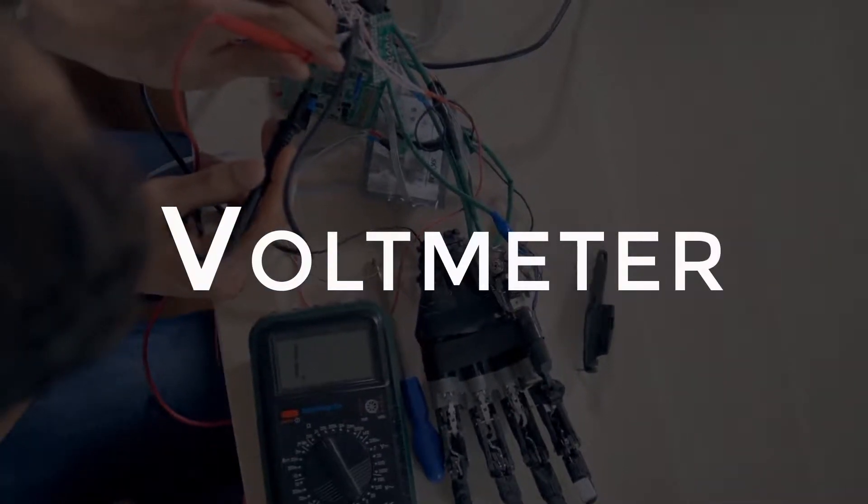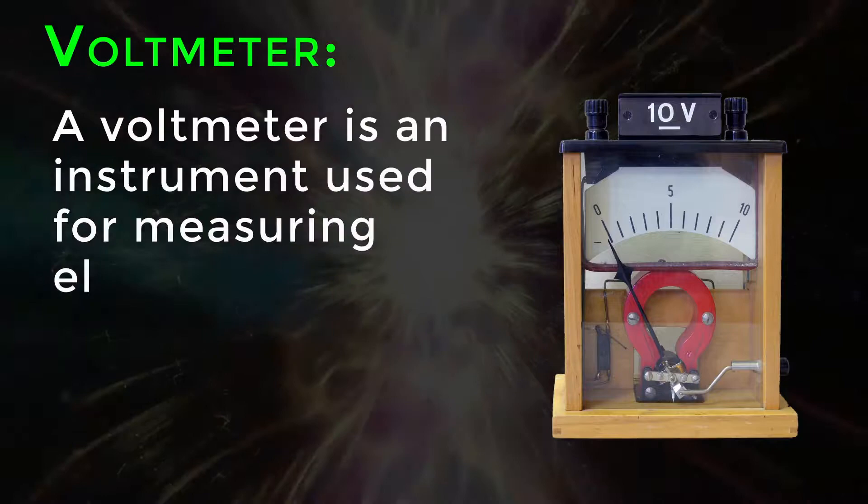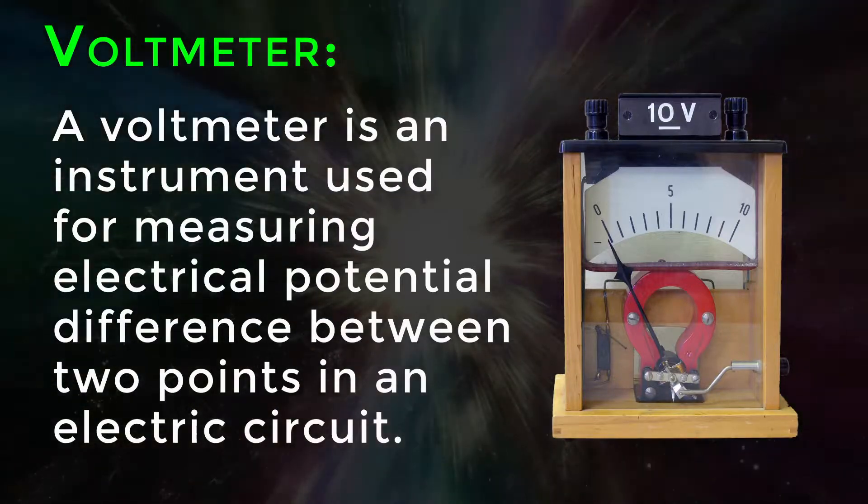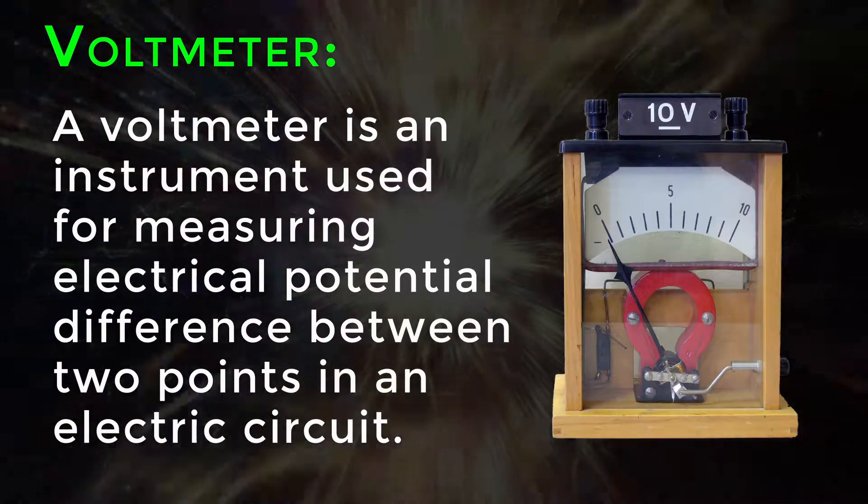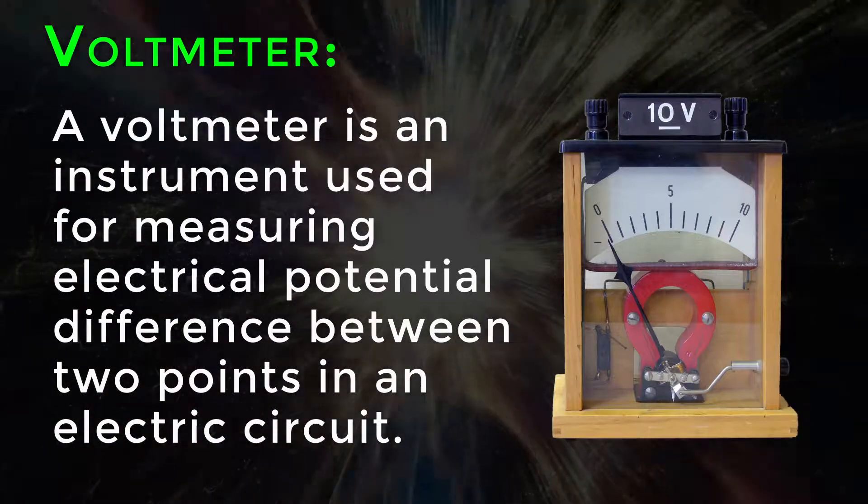Voltmeter. A voltmeter is an instrument used for measuring electrical potential difference between two points in an electric circuit.